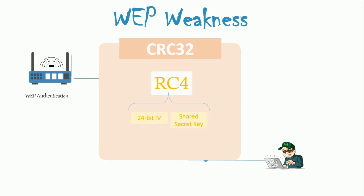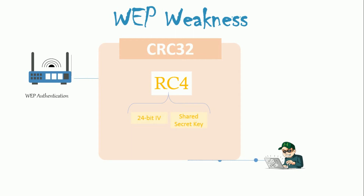WEP uses the RC4 encryption algorithm to create stream ciphers. The stream cipher input is made up of an initial value (IV) and a secret key. The length of the IV is 24 bits long, while the secret key can either be 40 bits or 104 bits long, making the total length either 64 bits or 128 bits. The lower possible value of the secret key makes it easy to crack. Weak IV combinations do not encrypt sufficiently, making them vulnerable to attacks.